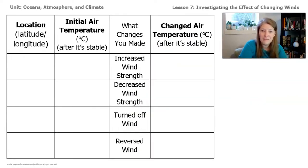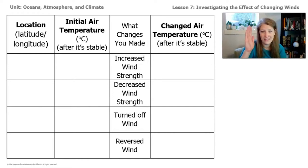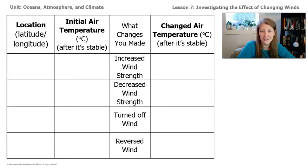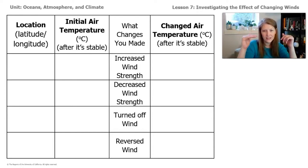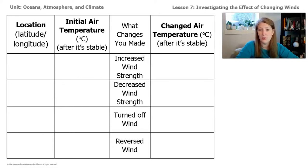You're going to need a data table like this — you can pause the screen and write this down. You need four columns: the initial or beginning air temperature, the final or changed air temperature, the location of your sensor on the sim, and what changes you made. A data table like this would help you keep track of all your data.